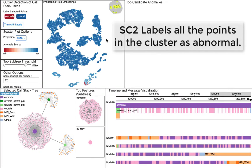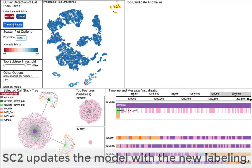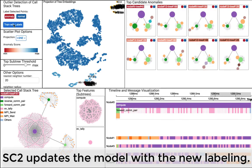Finally, SC2 labels all the points in the selected cluster as anomalies. He trains the model again. The learning results are updated.